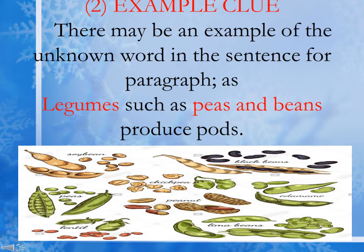The next hint is the example clue. We can understand a word and the paragraph with the help of examples. Here, the sentence given is: 'Legumes such as peas and beans produce pods.' We have to assume the meaning of 'legumes.' Examples are given — peas and beans — so we understand the word 'legumes' means plants which produce pods and are full of protein.